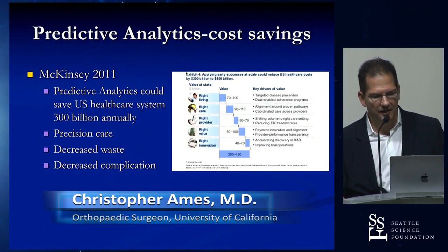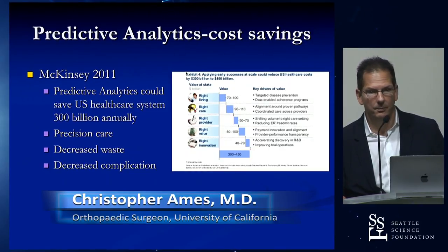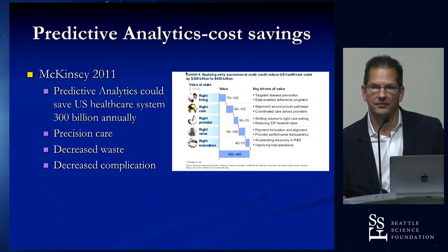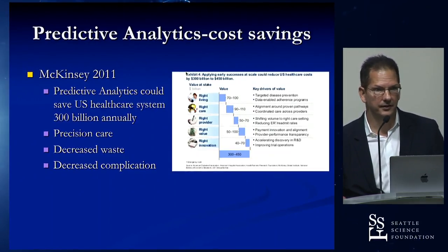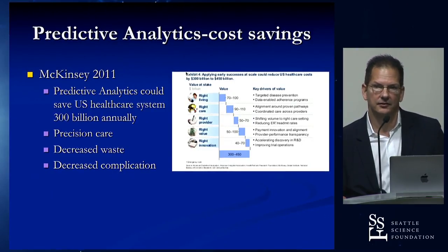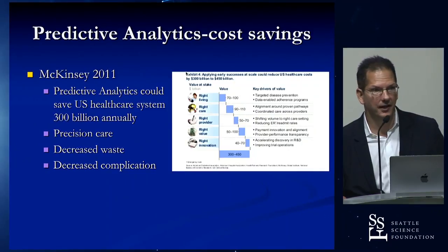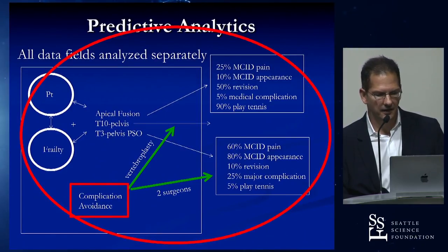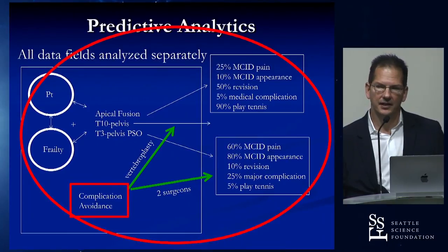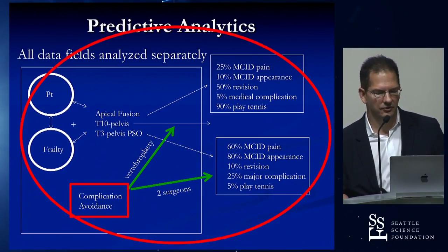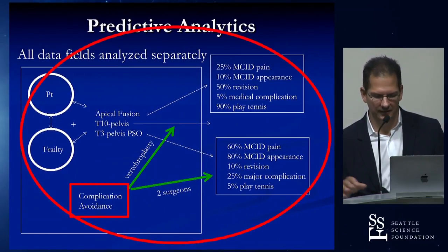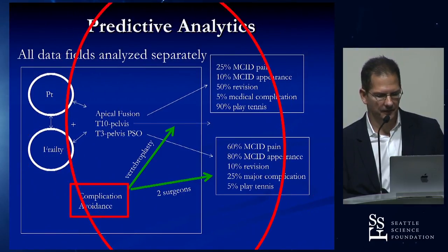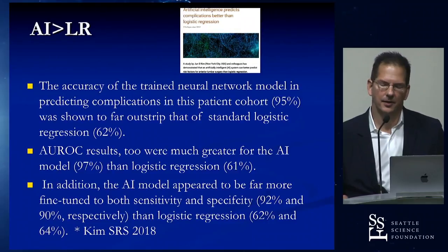McKinsey, the consulting firm, estimated in 2011 that the appropriate application of predictive modeling to U.S. healthcare could save the industry $300 billion per year via precision care — not operating on patients who will do poorly and have high complication rates, targeting care to patients likely to benefit most, decreasing waste, inventory management, census management, infection control, and decreasing complications. Predictive analytics looks at all factors — patient substrate, operation, facility — simultaneously, allowing real-time point-of-care decision-making.